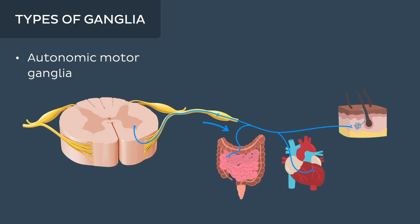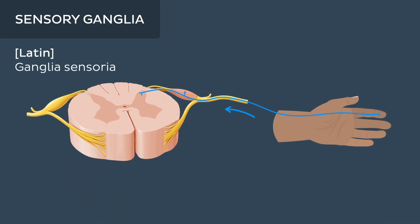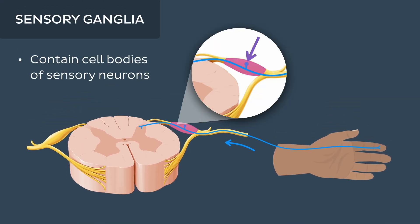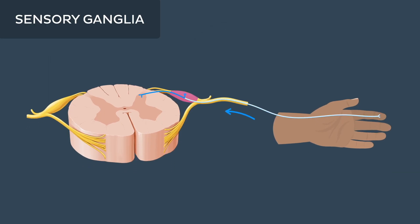Let's first take a closer look at the sensory ganglia. These ganglia specifically contain the cell bodies of sensory neurons and receive sensory information from the periphery before transmitting that information to either the spinal cord or the brain.